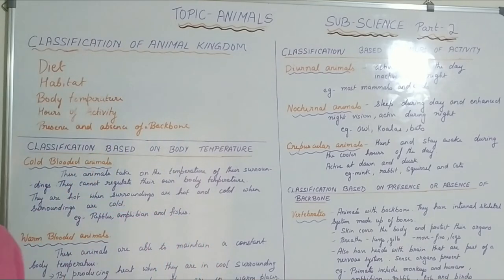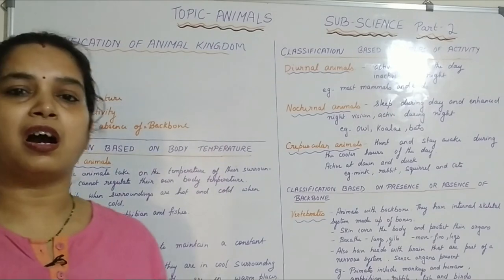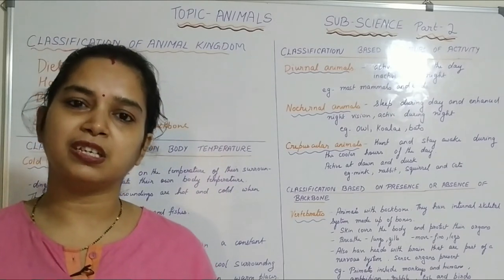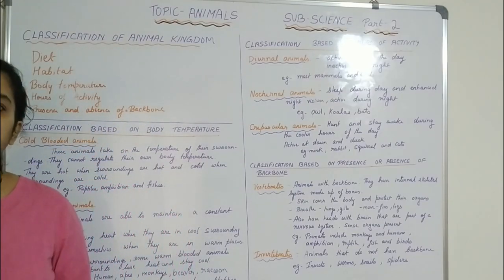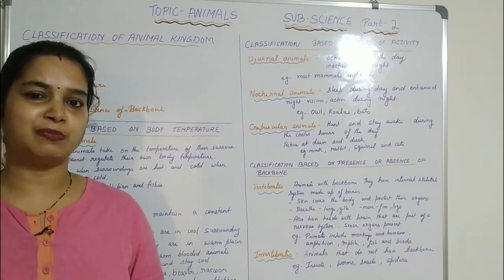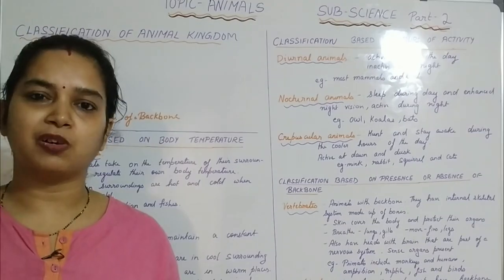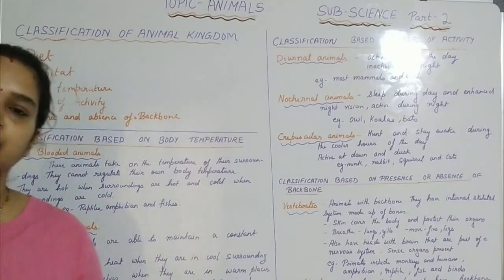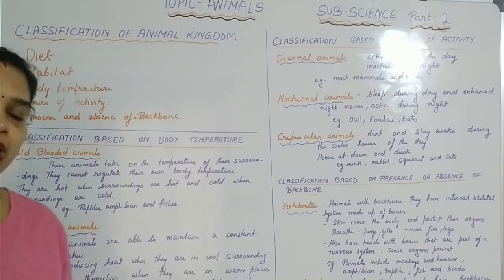Today we are going to study about the remaining three — how animals are classified according to the hours of activity, the body temperature, and the presence and absence of backbone present in the body. According to body temperature, they are classified into two types.